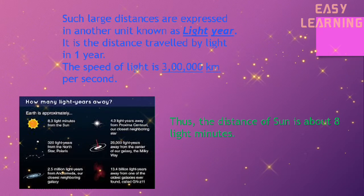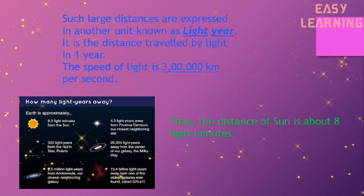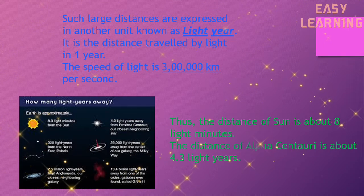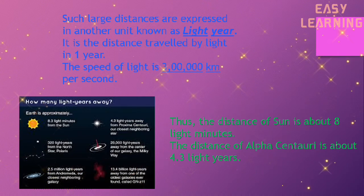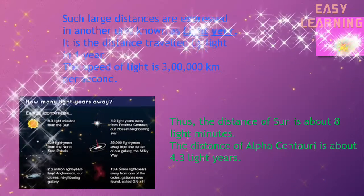Thus, the distance of the Sun is about eight light minutes, and the distance of Alpha Centauri is about 4.3 light years.